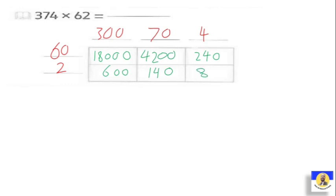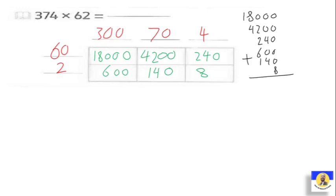After that, we start to make plus. Eighteen thousand, then four thousand two hundred, then six hundred, then one hundred forty, then eight. Now adding: eight is the first. Then four plus four equals eight. Two plus two equals four, plus six equals ten, plus one equals eleven — carry up one. Nine plus four equals thirteen — carry up one. One and one becomes two. So the answer here will be twenty-three thousand one hundred eighty-eight.